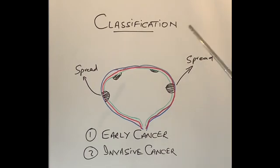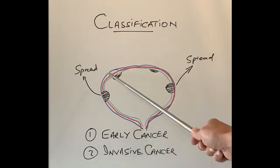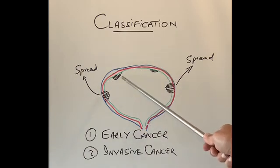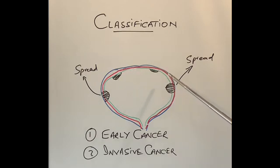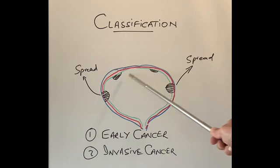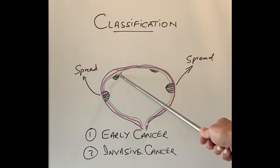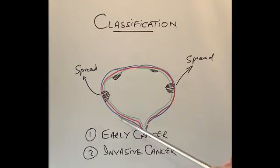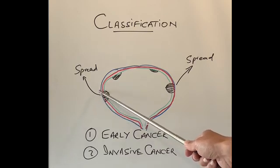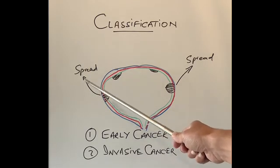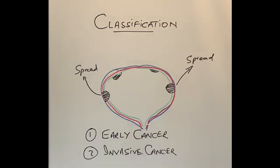Bladder cancer can be classified into two types: early cancer and invasive or advanced cancer. Early cancer is limited to the lining of the bladder — the uroepithelium, shown here with a green lining — and does not go deep. If a cancer invades into the muscle, shown with a red line, or spreads to the outside lining of the bladder, beyond the bladder, into the lymph glands, or to the lungs or bones, then that is called invasive or advanced bladder cancer.